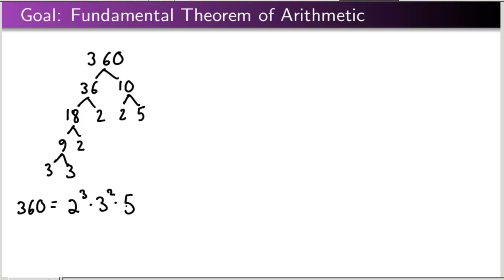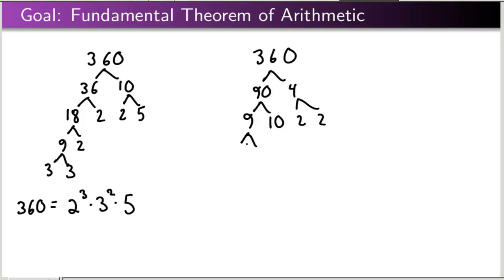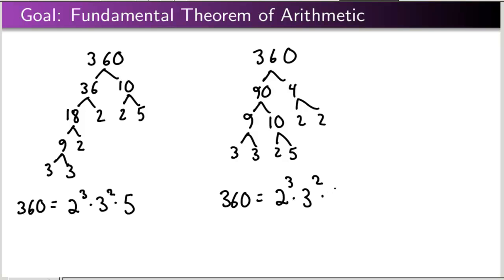Now there are lots of other ways we could have proceeded here. I could have gone 90 times 4. 90 is 9 times 10, 4 is 2 times 2, then 3 times 3, and 2 times 5. And once again, I'm seeing that 360 is 2 cubed times 3 squared times 5. I'm getting exactly the same factorization.